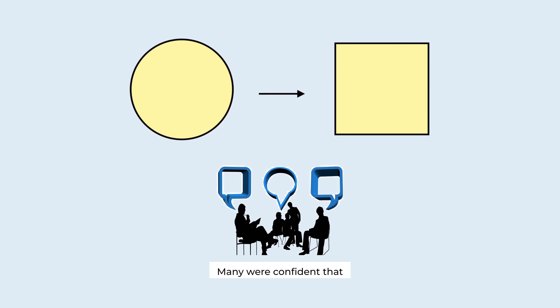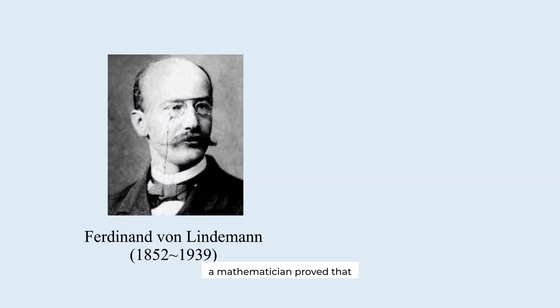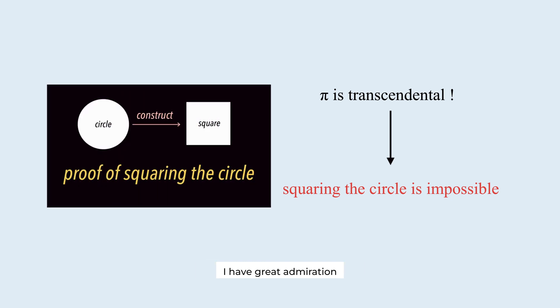Many were confident that it could be done as well. But no one succeeded. In the end, a mathematician proved that squaring the circle was impossible. If you are curious about this proof, please watch my another video. I have great admiration for those who wrestled with this problem, exploring every possible approach in pursuit of a solution.